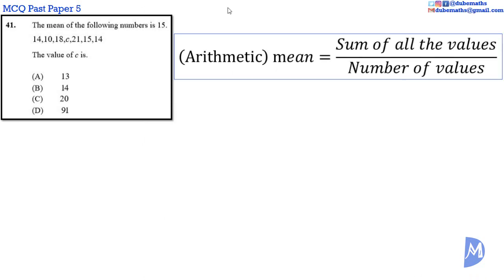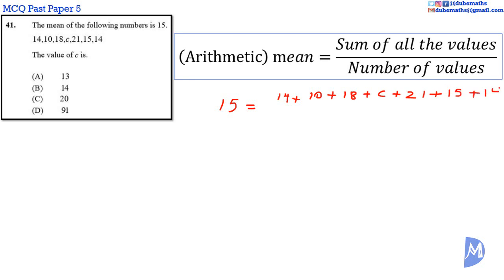Question 41. The arithmetic mean, or just mean, is the sum of all the values over the number of values. Therefore, 15 is equal to 14 added to 10 added to 18 added to C added to 21 added to 15 added to 14, all over 7.